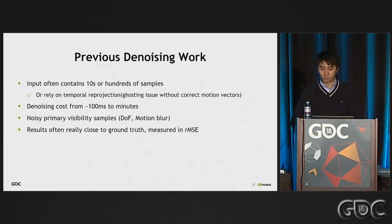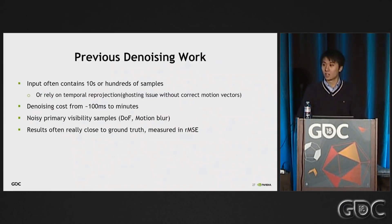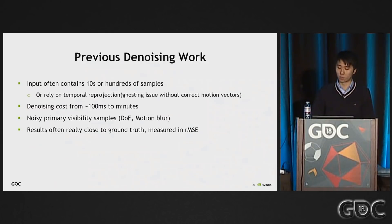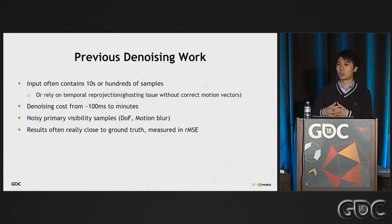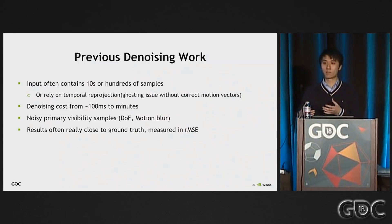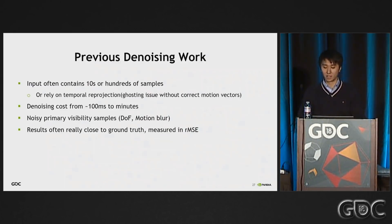The cost of those denoisers mentioned earlier is maybe from hundreds of milliseconds to minutes, which is very fast compared to waiting for the path tracer to converge — but it's a totally different story in real-time, where our frame-time budget is only 16 milliseconds. Also worth mentioning: most previous denoisers assume the primary visibility buffer is also noisy because they simulate depth of field and motion blur via stochastic sampling of the visibility buffer, which is different in games.